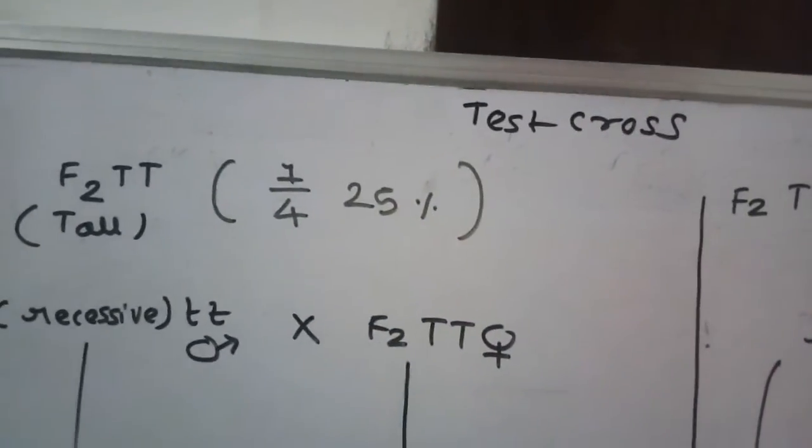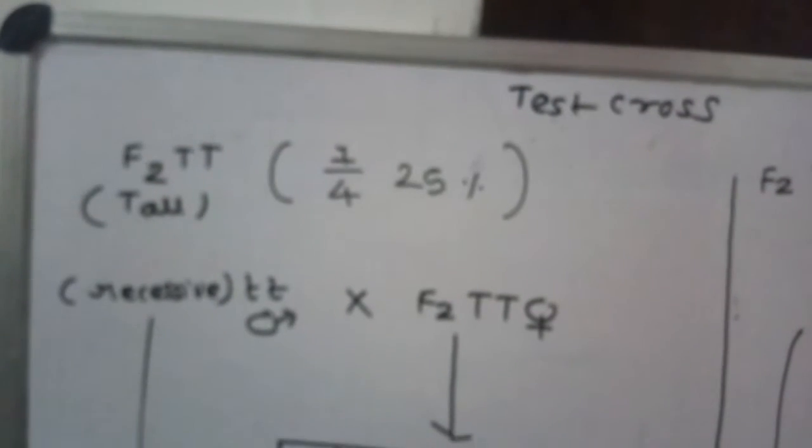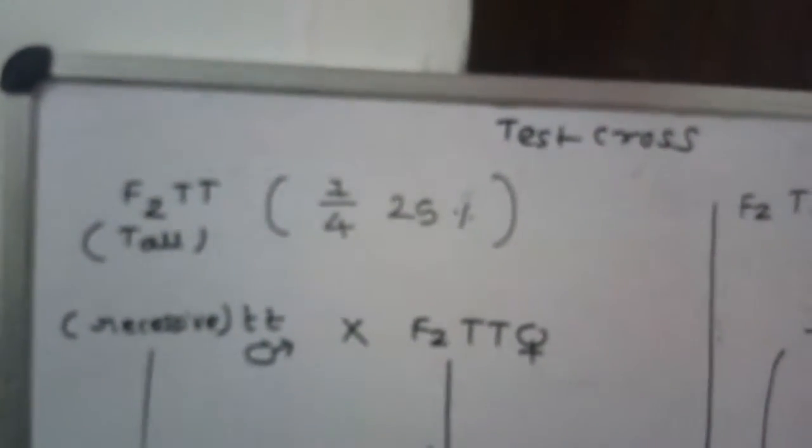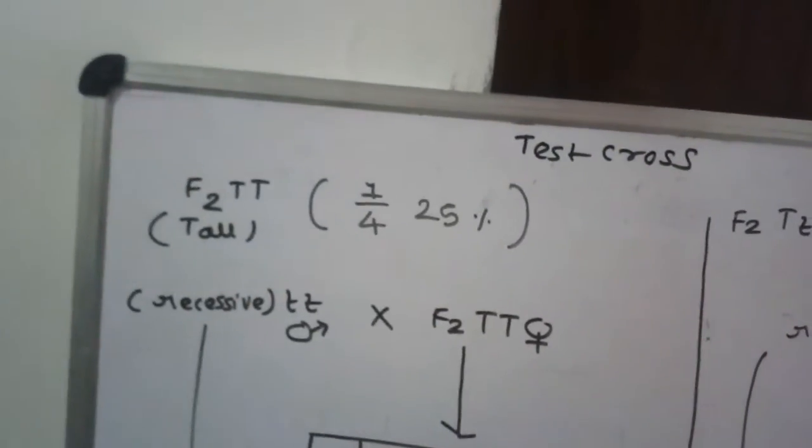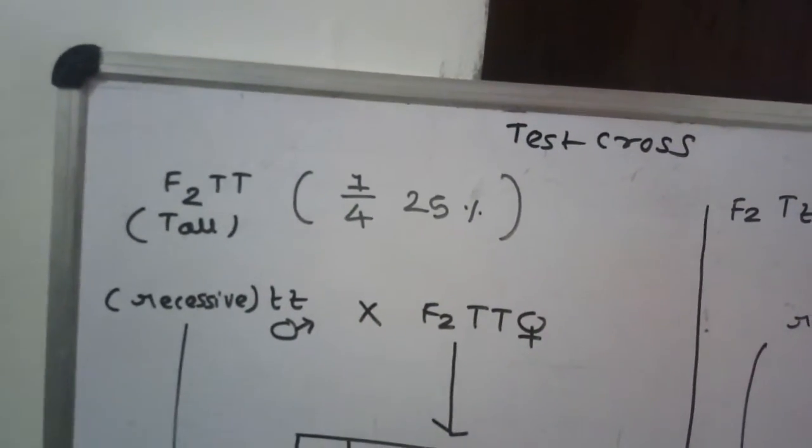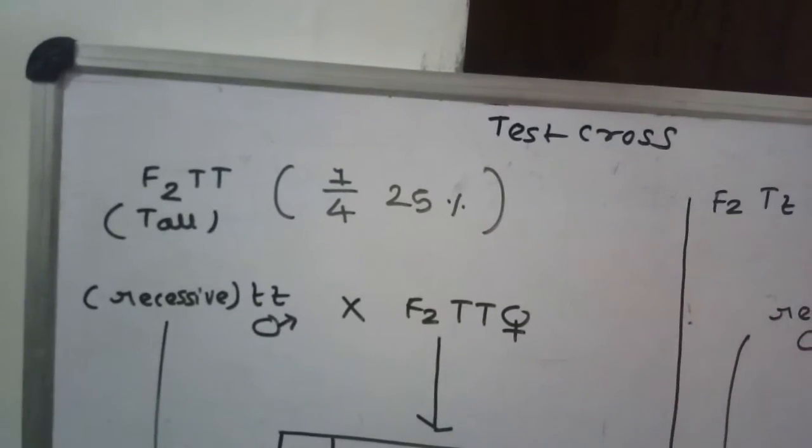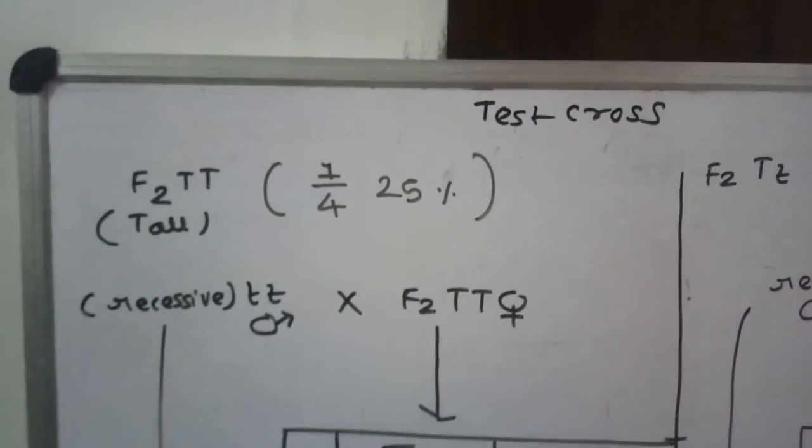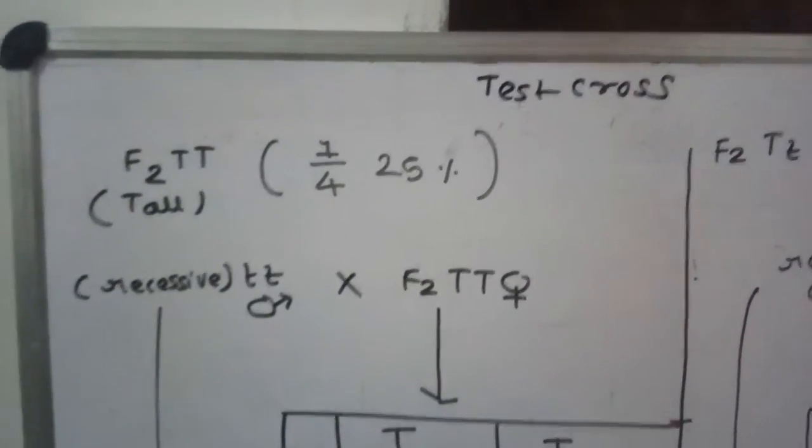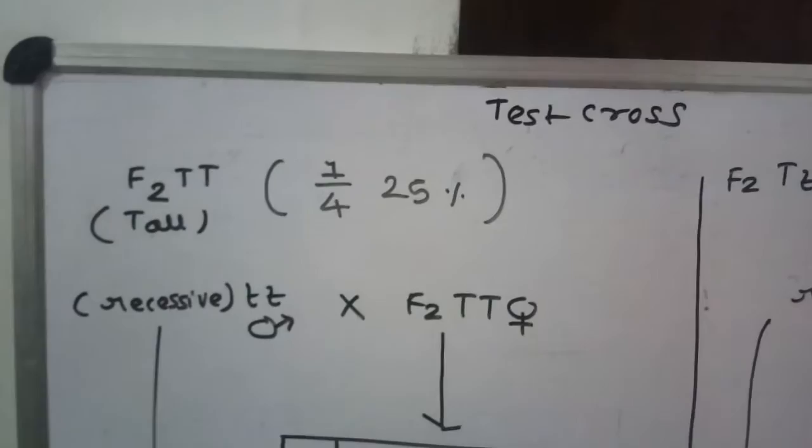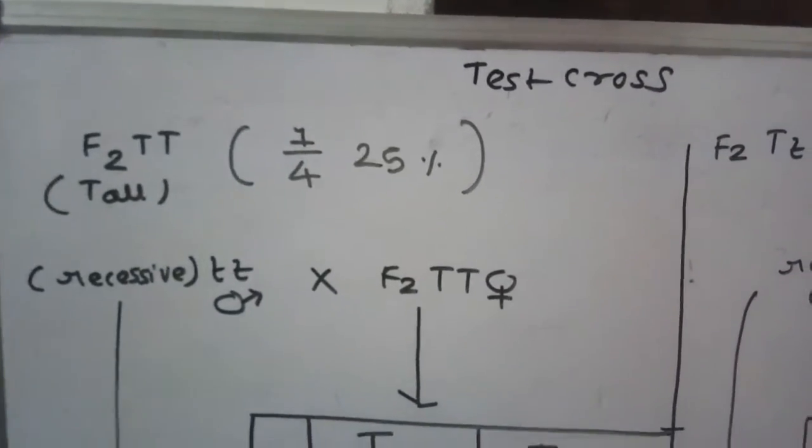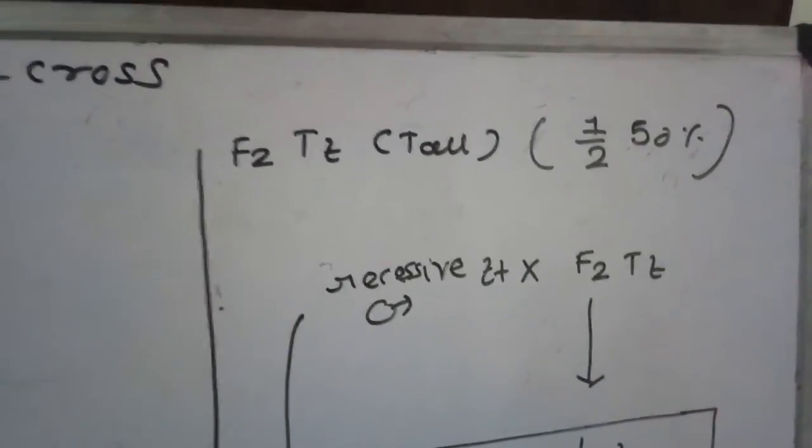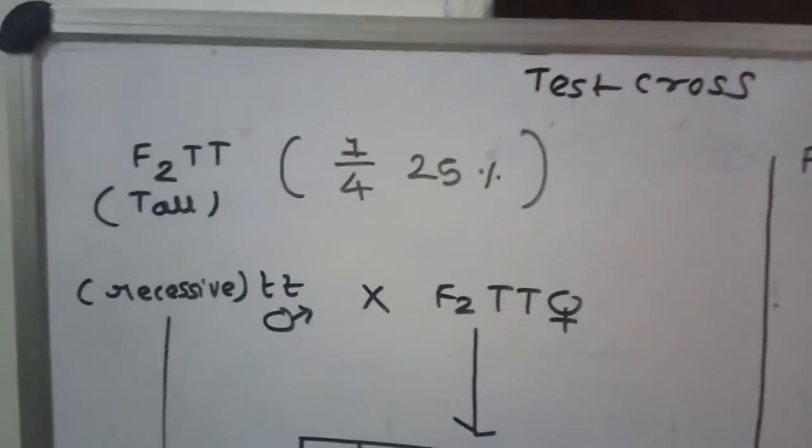The phenotype is the same. All the 3/4 tall plants are identically tall to their parent tall plant. We don't know from the phenotype alone whether they are homozygous or heterozygous. If we want to know the genotype, we can use a test cross.